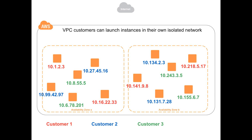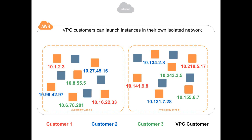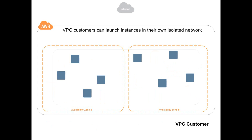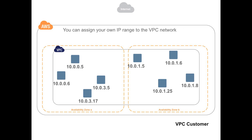So what does this look like? Traditionally, when customers launch instances, we assign them an internal IP address from our own pool — there wasn't a lot of control over that. When a VPC customer launches an instance, you'll be able to tell us the different IP subnet range you want used. You can specify whether it comes out of your DHCP server, or you can give a direct manual specification for your EC2 instance. That means it's going to create this isolated environment encapsulated within the VPC product, and you can assign your own IP range — in these examples, we're using 10.0, but you can use any internally available IP address range.